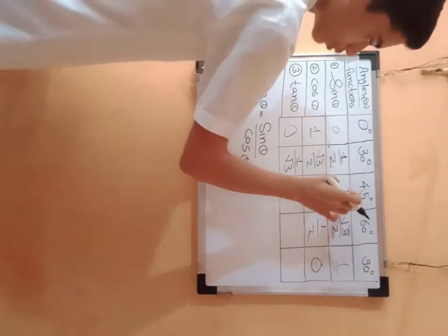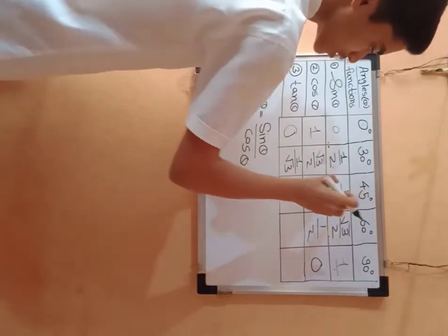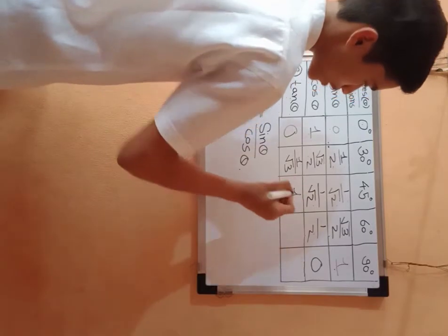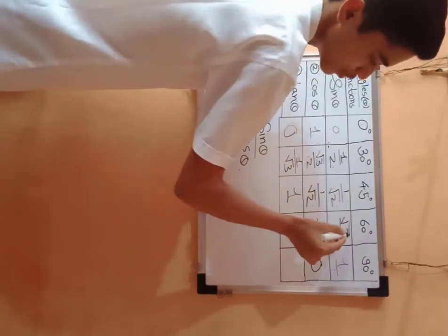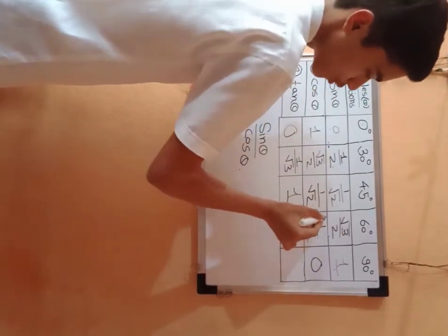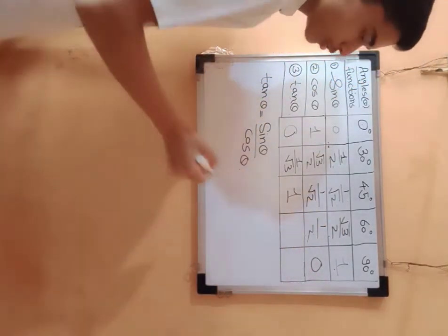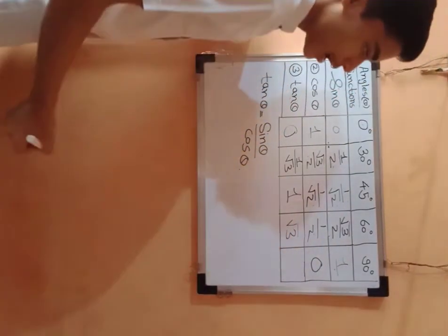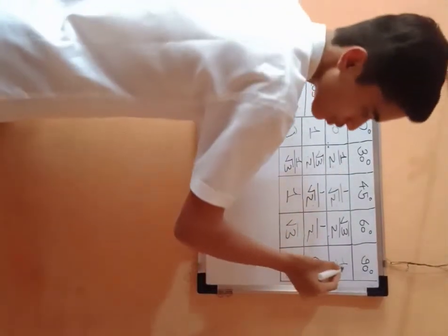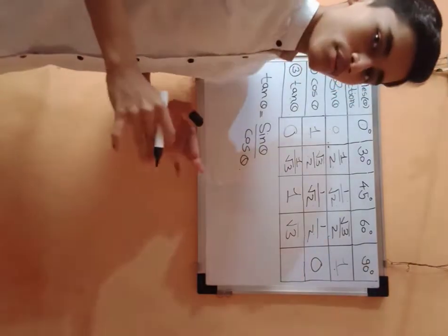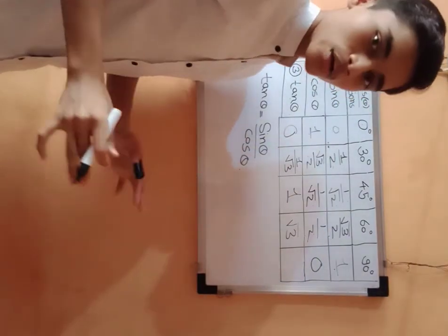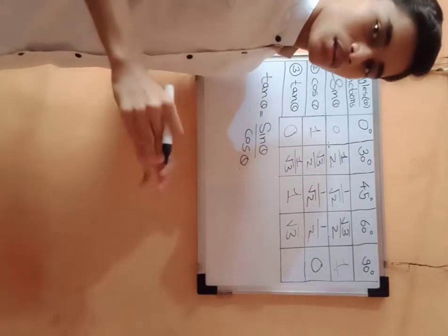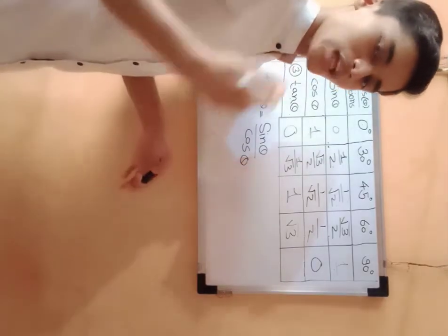Tan of 45° equals 1, and tan of 60° equals √3/1, which is √3. Tan of 90° equals 1/0, which we cannot calculate, so the answer is not defined — it is infinity.